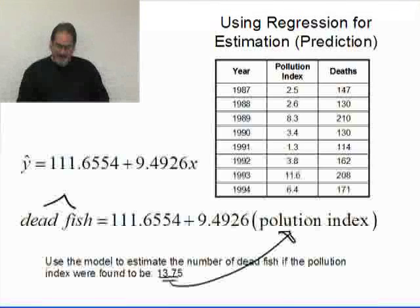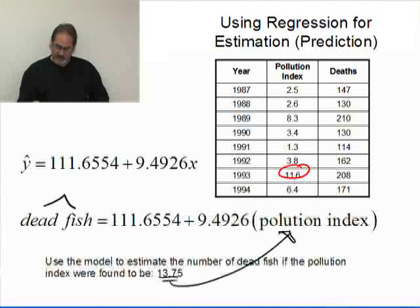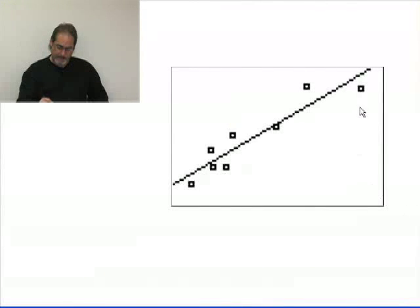If I look at my data, the biggest value on the x-axis is 11.6. That means in the scatter plot, this has an x value of 11.6—that's the biggest x value I have. Over here, that's the actual value of y.